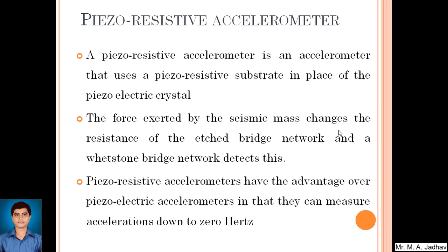A piezoresistive accelerometer uses a piezoresistive substrate in place of the piezoelectric crystal. Instead of a piezoelectric crystal, a piezoresistive structure is used. The force exerted by the seismic mass changes the resistance of each bridge network, and a Wheatstone bridge network detects this change. In that substrate, a strain gauge-like structure is used whose resistance changes due to the inertia of the seismic mass. Piezoresistive accelerometers have the advantage over piezoelectric accelerometers in that they can measure accelerations down to zero hertz — that is, very small accelerations are also measured with accuracy.